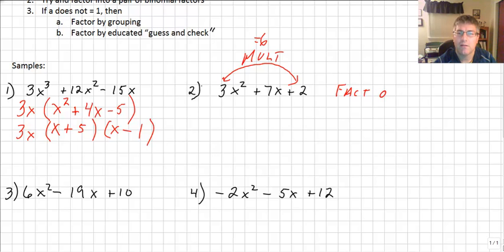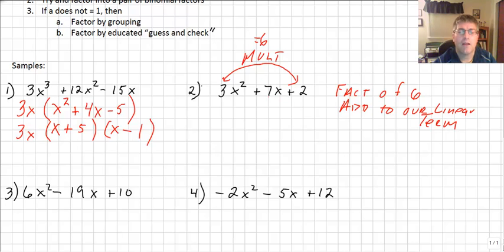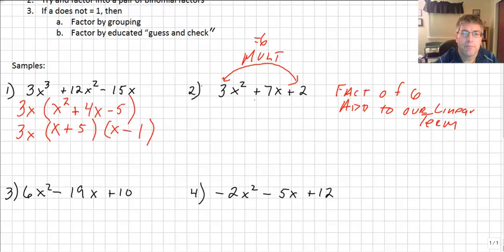We need factors of 6 that add to our middle term. This sounds a little complicated at first, but after you do it a few times, it becomes easier. Factors of 6 would be 3 and 2 — but that doesn't add to 7 — so we'll use 6 and 1. We rewrite the trinomial as 3x² + 6x + x + 2.